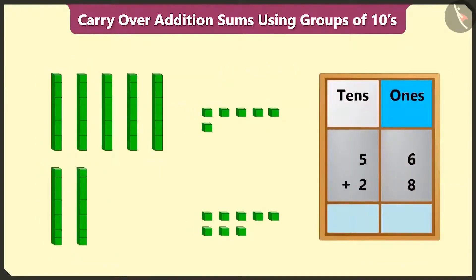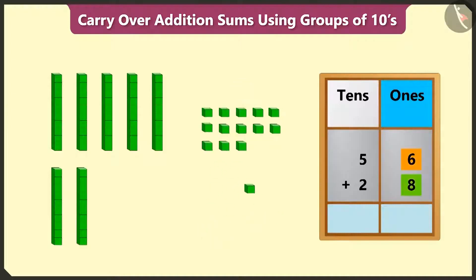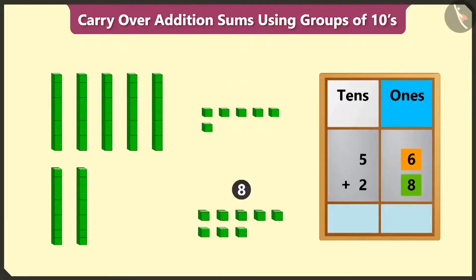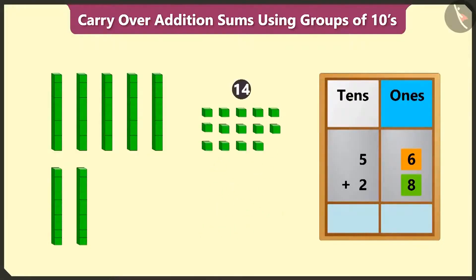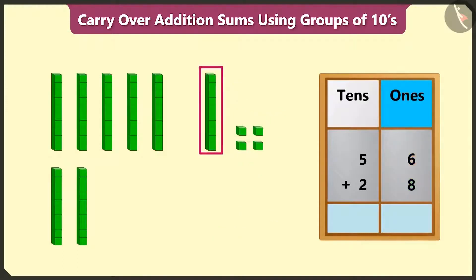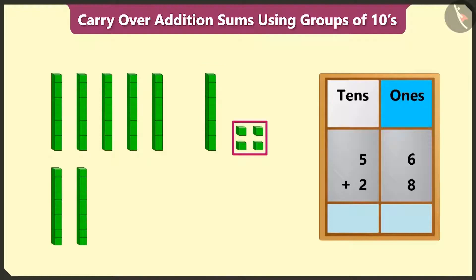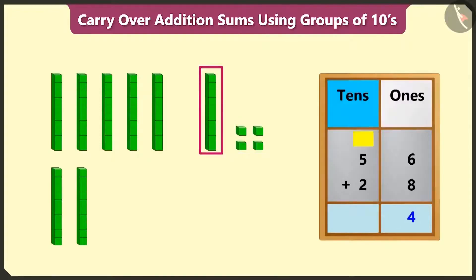First, we will add the numbers in the ones place. 6 ones added to 8 ones will equal 14. This means 6 ones and 8 ones added together will equal 14 ones. Out of 14 ones, we can form a group of 1 ten — so 14 has 1 ten and 4 ones. We have to write 4 in the ones box and carry over 1 ten in the tens box.